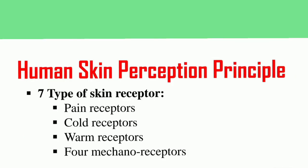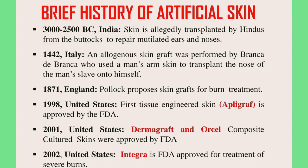Another interesting feature is how the human skin perceives signals. There are seven major types of skin receptors: the pain receptor picks up stimuli for pain, the cold receptor senses cold, the warm receptor perceives warmth or heat, and there are four mechanoreceptors which pick up mechanical stimuli from the environment.